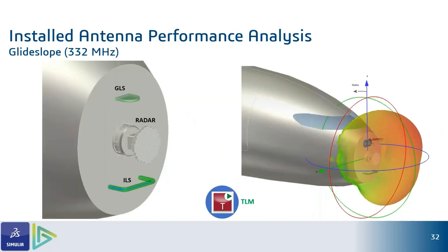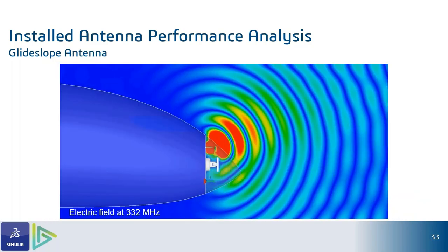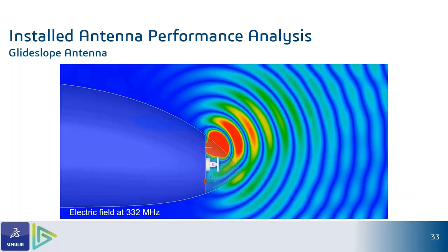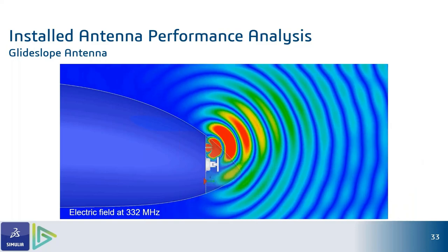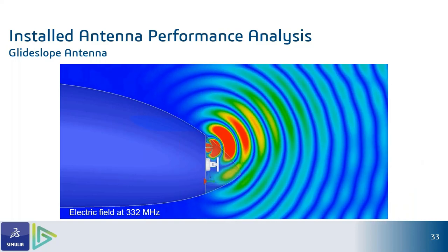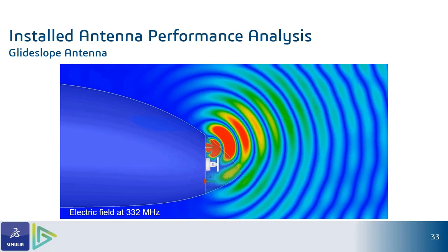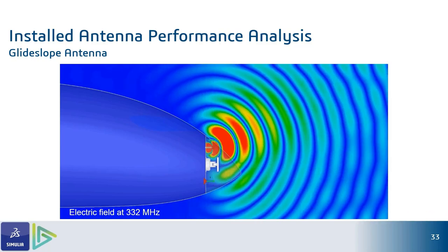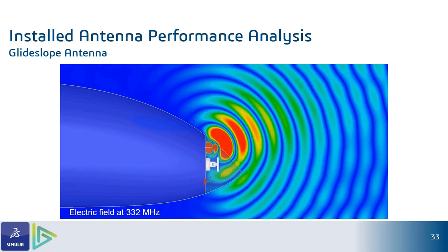It's important that radar or other antennas working together are not interfering with or inhibiting each other's performance. For example, let's take the case of the GLS or glide slope. You want to ensure that the electric field is not unevenly distributed — you don't want places where the electric field is strong and others where it's weak. You want to ensure that when the receiver receives the signal, it's uniformly strong and the radar or ILS doesn't affect it.